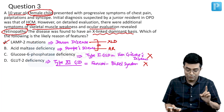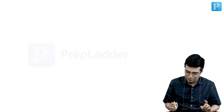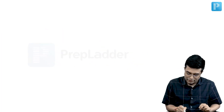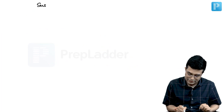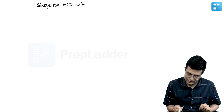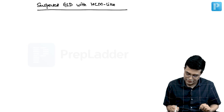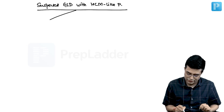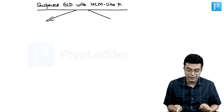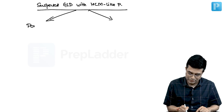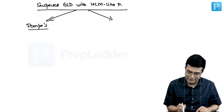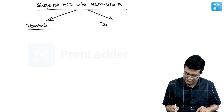This is a tricky question. The key points to remember: whenever you have a suspected glycogen storage disease with a hypertrophic cardiomyopathy-like presentation, there will be two possibilities — Pompe disease and Danon disease.